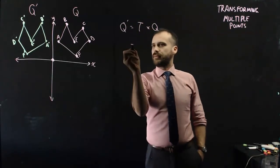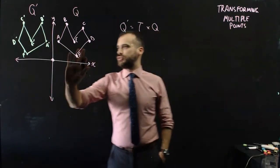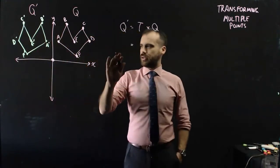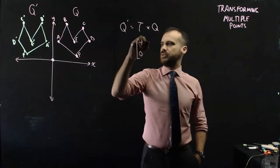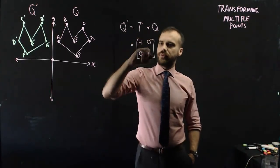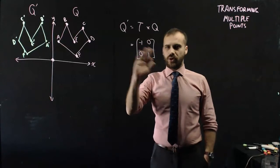Now, the transformation matrix to reflect something, it should be negative 1, 0, 0, 1. All right. So there's my reflection in the y-axis.